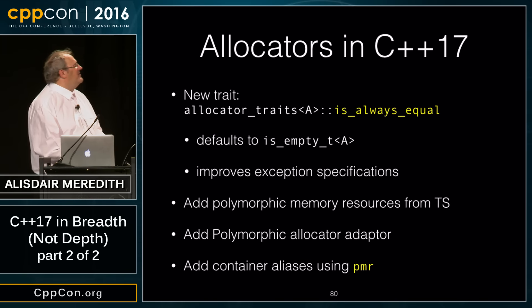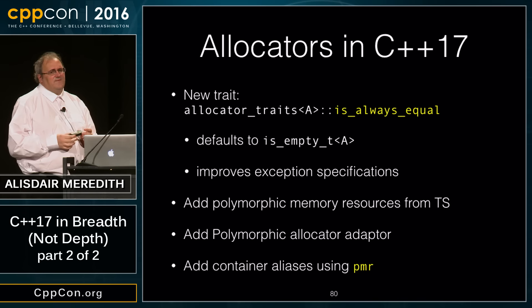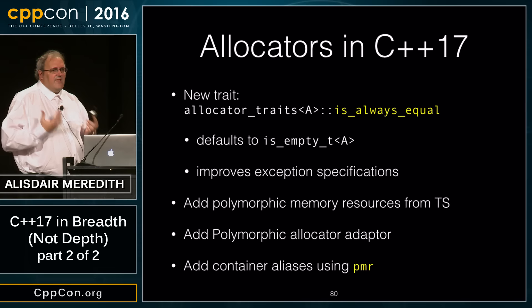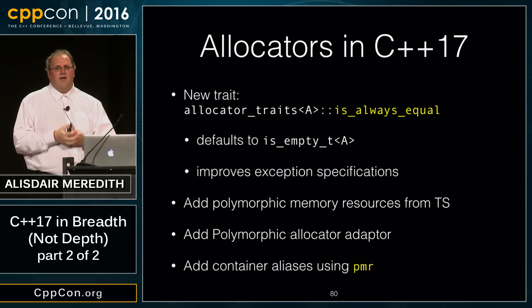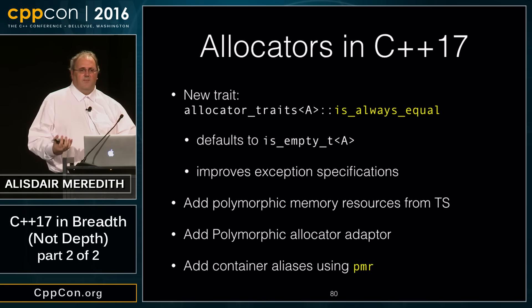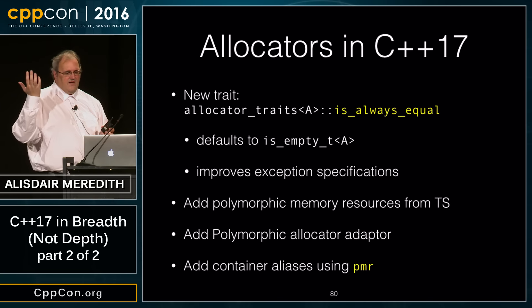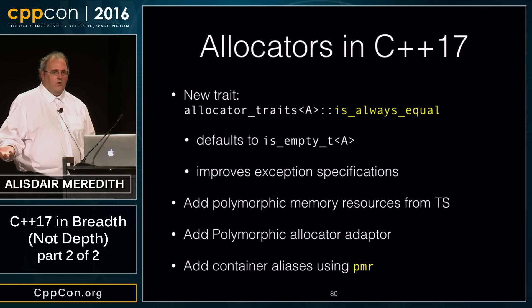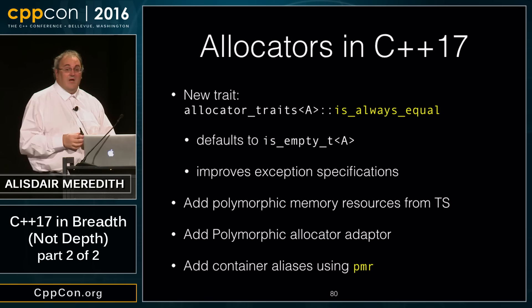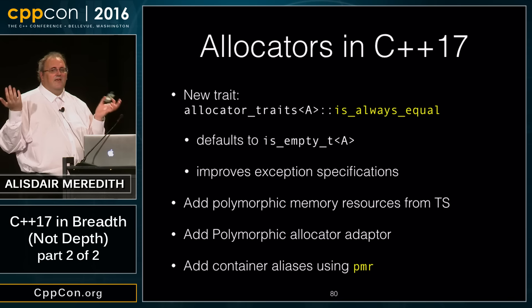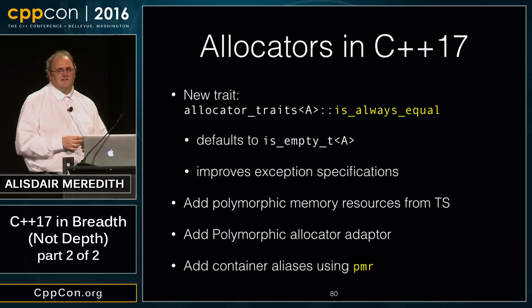For allocators in C++17: we have a new is_always_equal trait to simplify exception specifications. std::allocator is stateless — any two allocators of that type compare equal and can interchange memory — but lots of code had to query that at runtime. The new is_always_equal trait defaults to true for empty types, letting us give much better exception safety guarantees throughout the standard library.